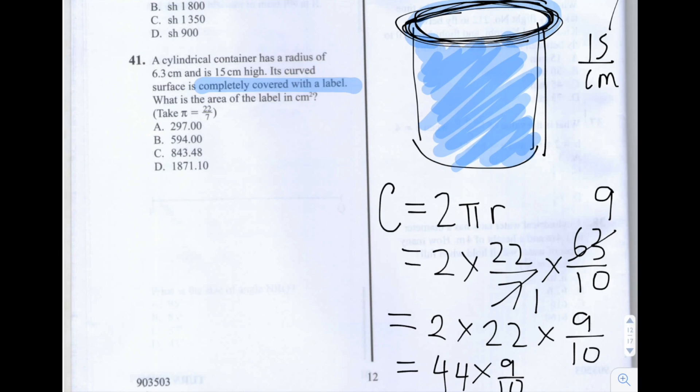5 times 6 is 30. So 0 carry 3. 5 times 9 is 45. Add 3, that's 48. So 8 carry 4. Cross this out. 5 times 3 is 15. Add 4, 19.